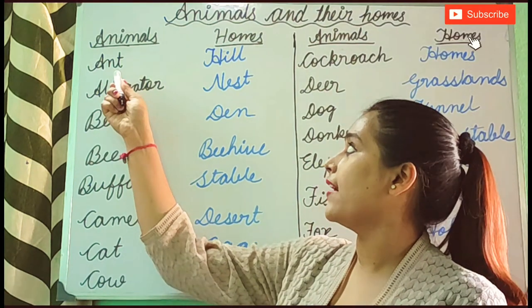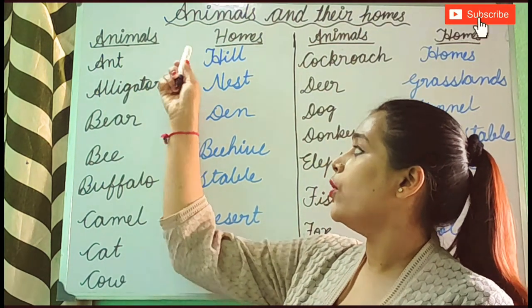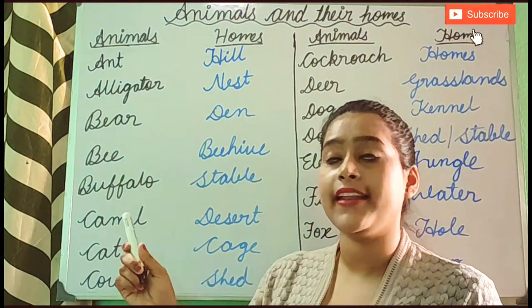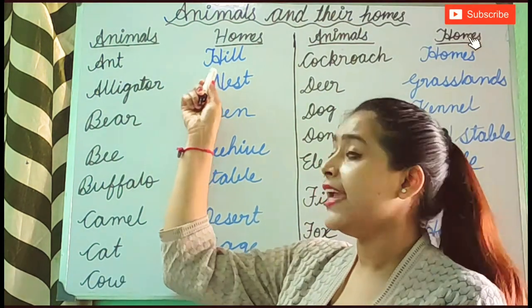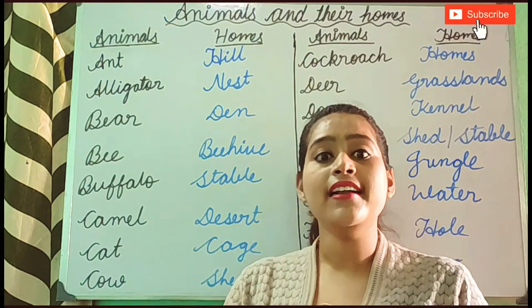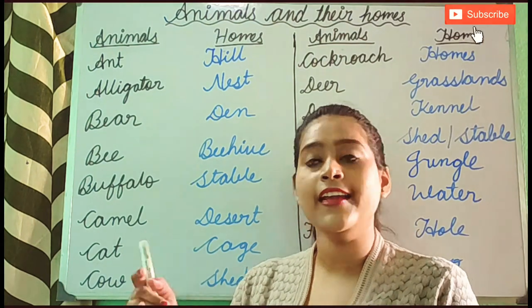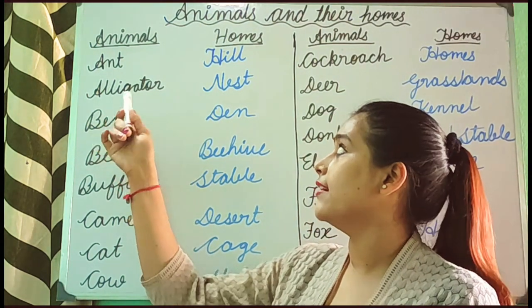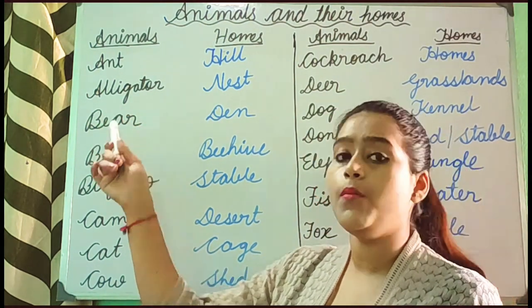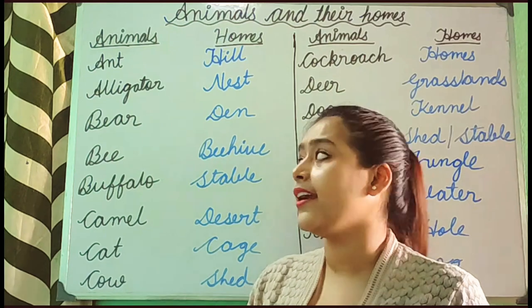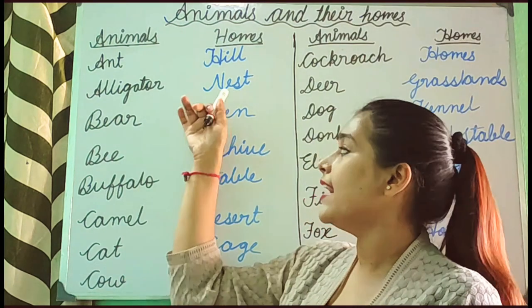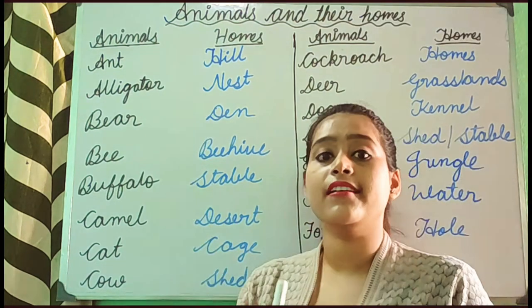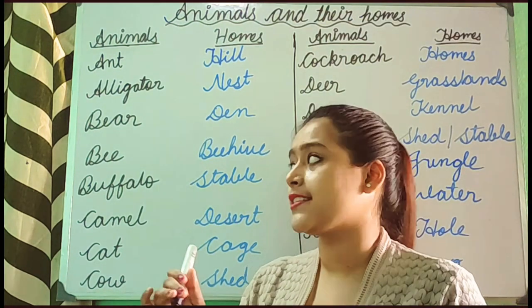First one is Ant. So the home of an ant is hill. Ant lives in a hill. Next one is Alligator. So the home of an alligator is nest. Alligator lives in a nest.